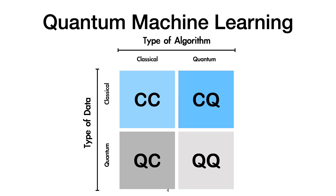In quantum machine learning, we have different categories depending on the type of algorithm and the type of data the algorithm is processing. In this talk, I will focus on the CQ part — where the RL environment is classical and we develop a quantum algorithm to process this environment.